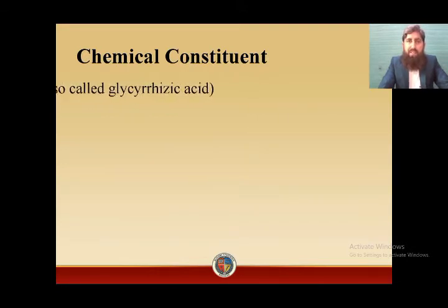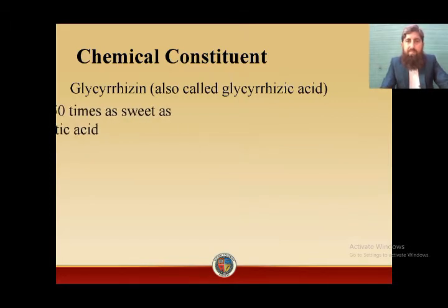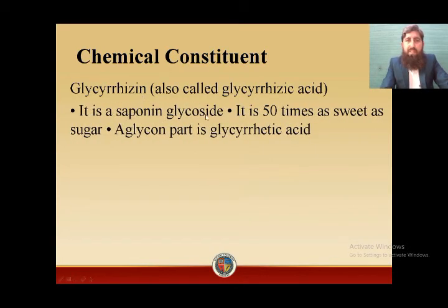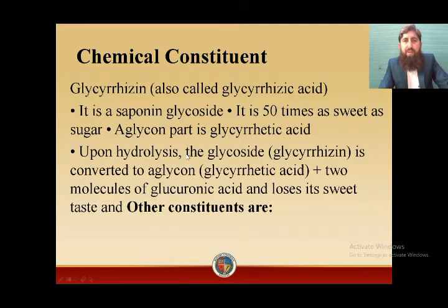The main active component which is pharmaceutically and therapeutically active in glycyrrhiza is glycyrrhizin, also called glycyrrhizic acid. It is a saponin glycoside and it is 50 times as sweet as sugar. The aglycone part is glycyrrhetic acid. Upon hydrolysis, the glycoside glycyrrhizin is converted to the aglycone glycyrrhetic acid plus two molecules of glucuronic acid.